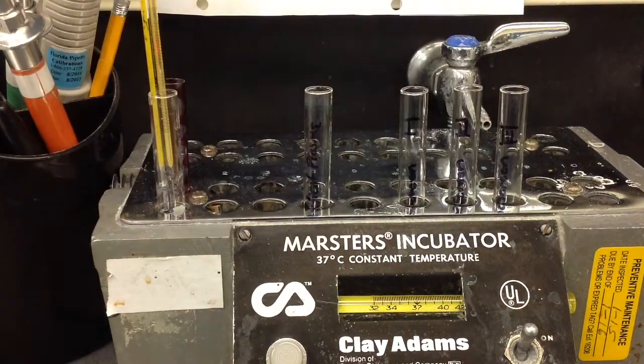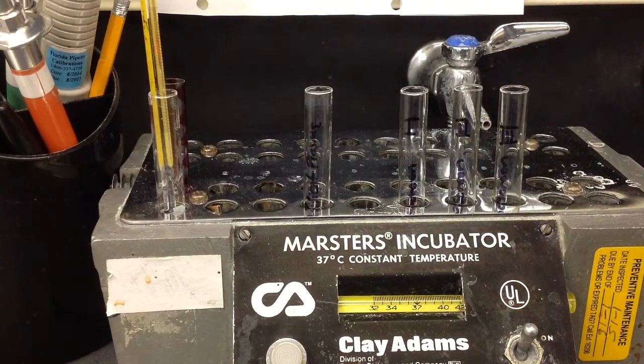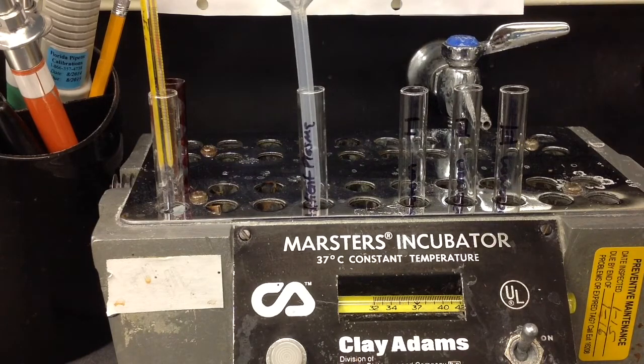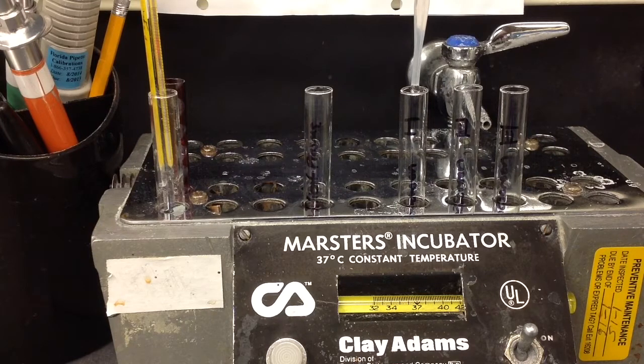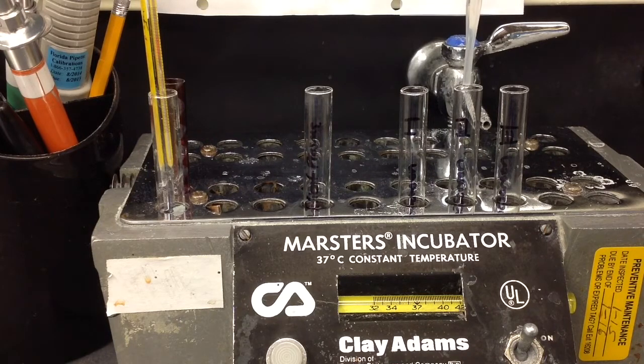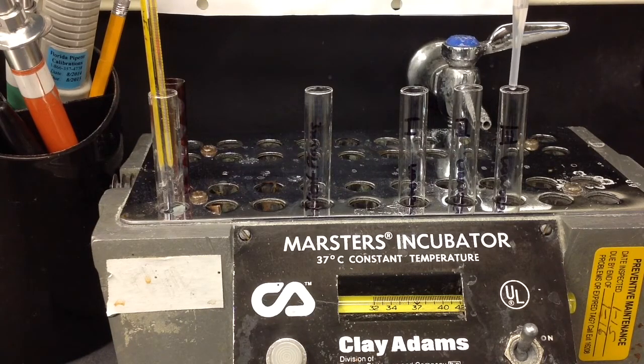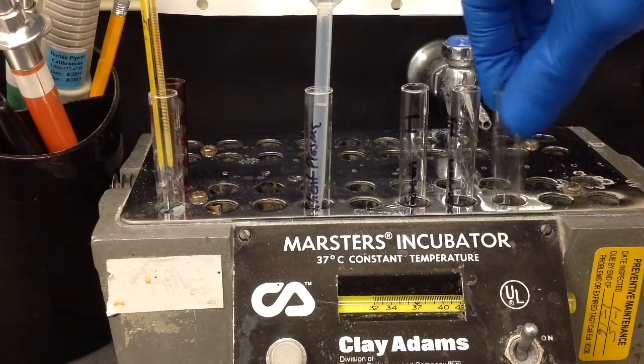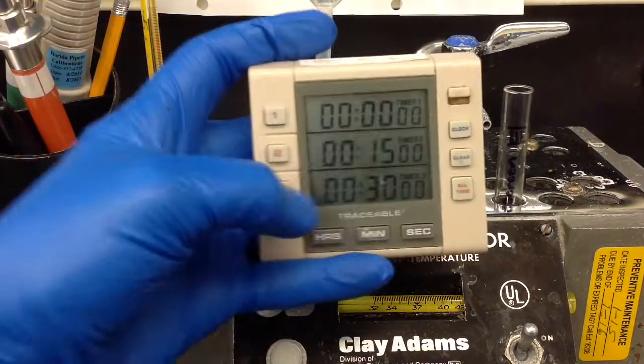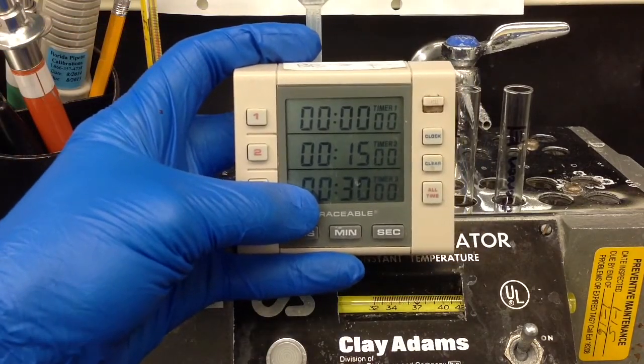Now, after your 15 minutes is up, at this point you're going to go ahead and you're going to add two drops of the heated patient plasma to each one of the screen cell tubes. And then after you add this, you want to go ahead and try and mix it as best you can. And because we're not adding any enhancement to these tubes, we're going to have to let it incubate for 30 minutes.